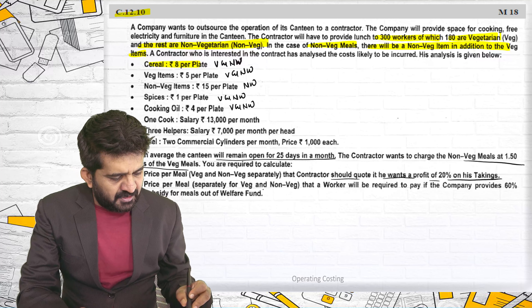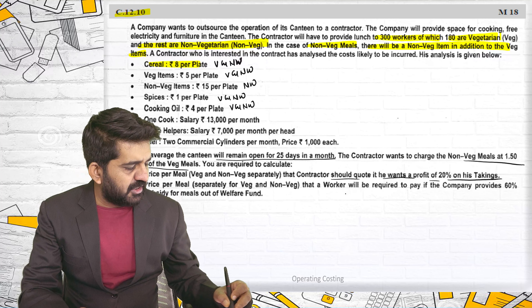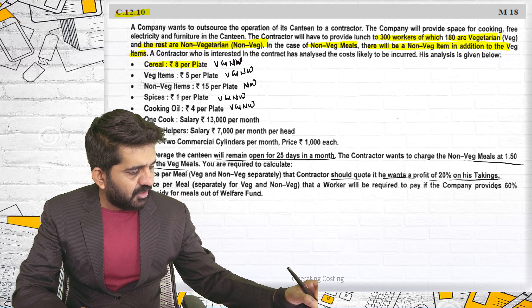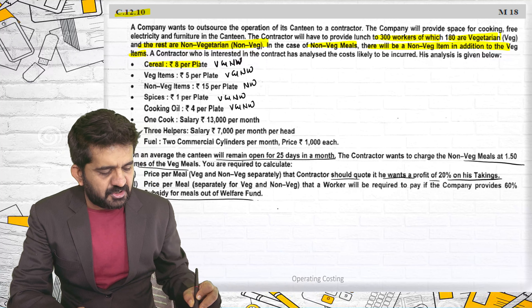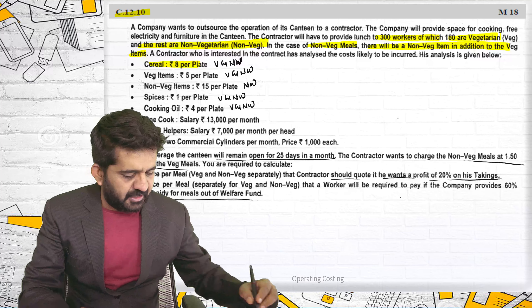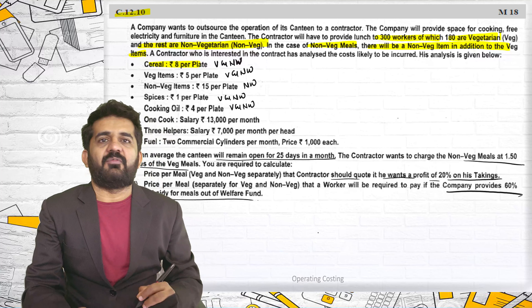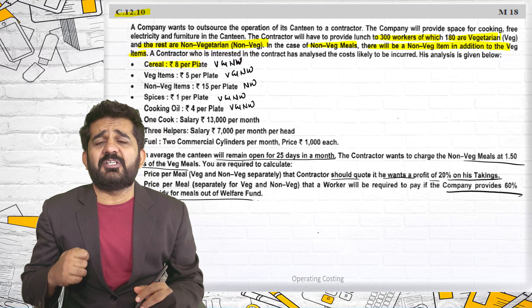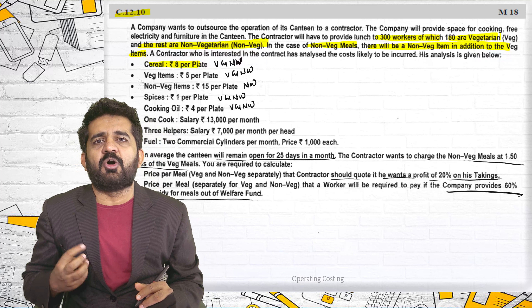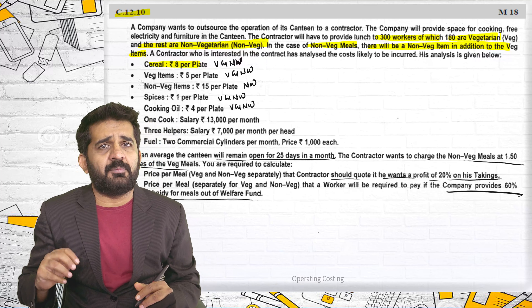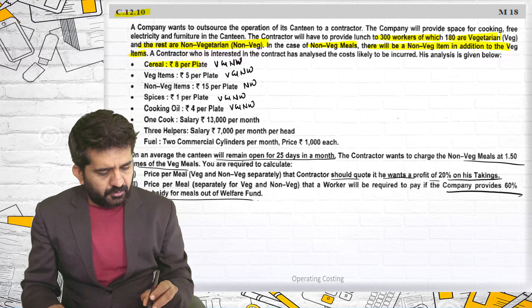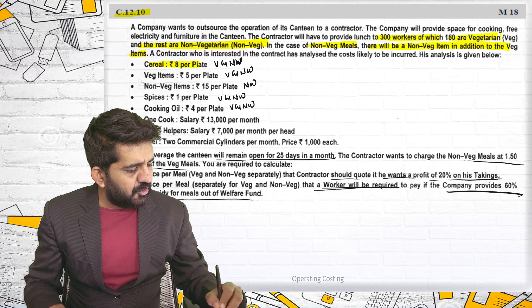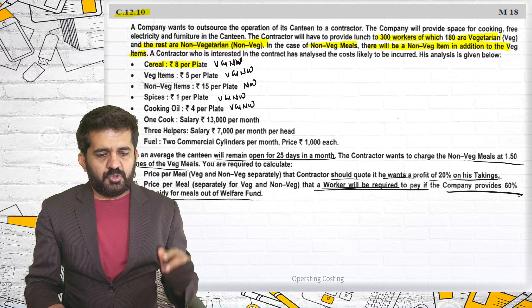The second part asks: price per meal separately for veg and non-veg that workers will be required to pay if the company provides a 60% subsidy for meals as worker welfare. This will be straightforward — 60% borne by company and 40% borne by workers, so we just need to find out 40% of the price.